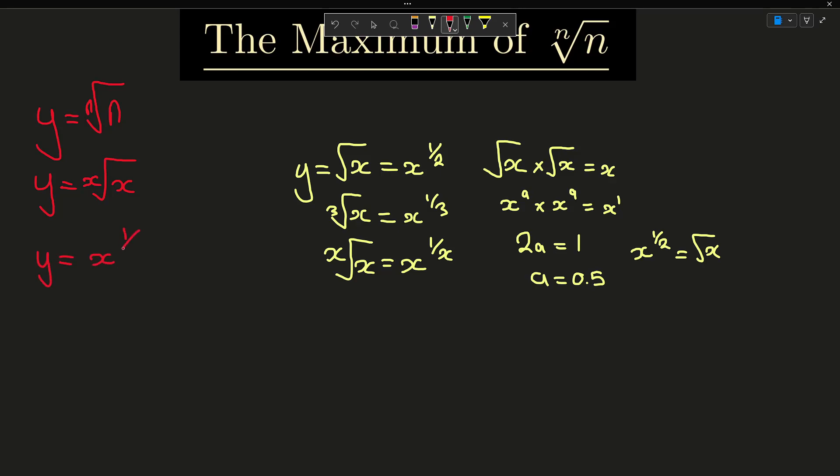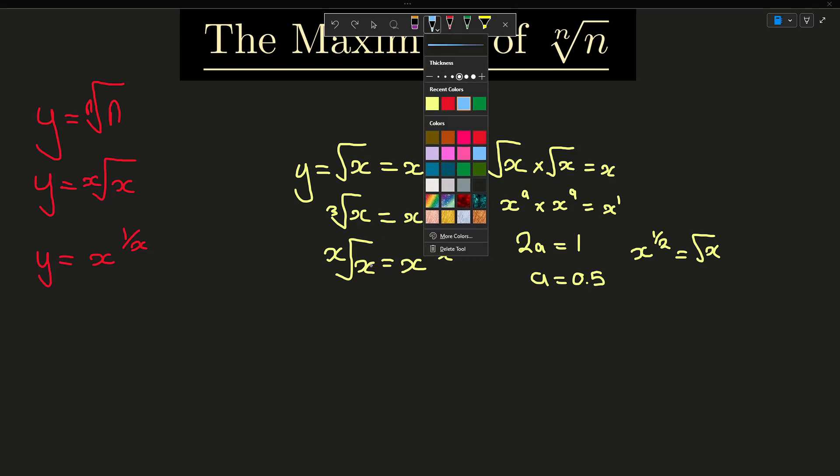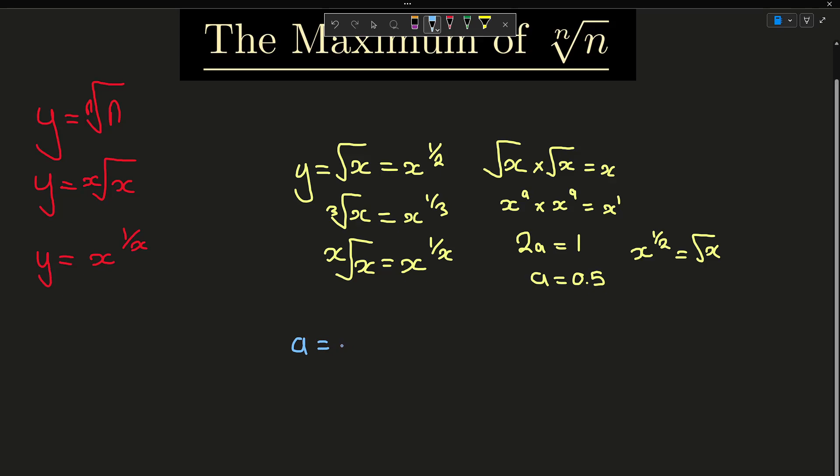So we can continue over here by saying y equals x to the 1 over x. The next step uses a formula you might have seen before, and this formula is a equals e to the ln a. And this formula is given in a lot of formula books, but if you've not seen this before it is quite intuitive. Following on from this, we can say that a to the b is equal to e to the b ln a. And in the context of the formula we've already generated over here, we can now say that y equals e to the 1 over x ln x.